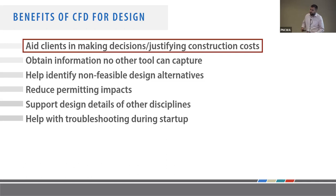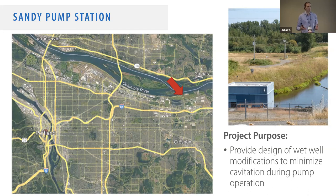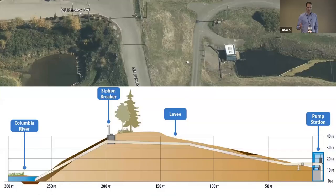To start, we'll discuss how we used CFD to help justify construction costs for a client. This is the Sandy Pump Station in northeast Portland — a flood management and flood control pump station. The purpose was to look at providing modifications to the wet well, which was built back in the 1940s. The pumps have been upgraded and upsized over time, but the wet well stayed the same shape. It no longer aligns with Hydraulic Institute standards, and operators noted sounds like cavitation, raising concerns about pump longevity and operation.